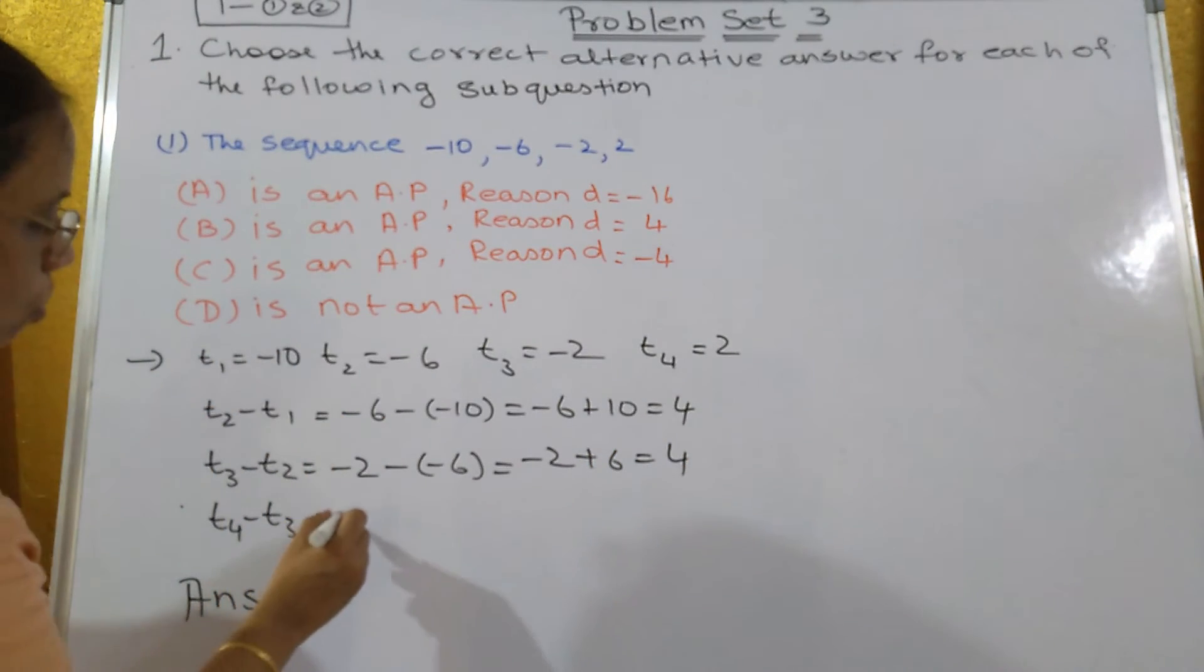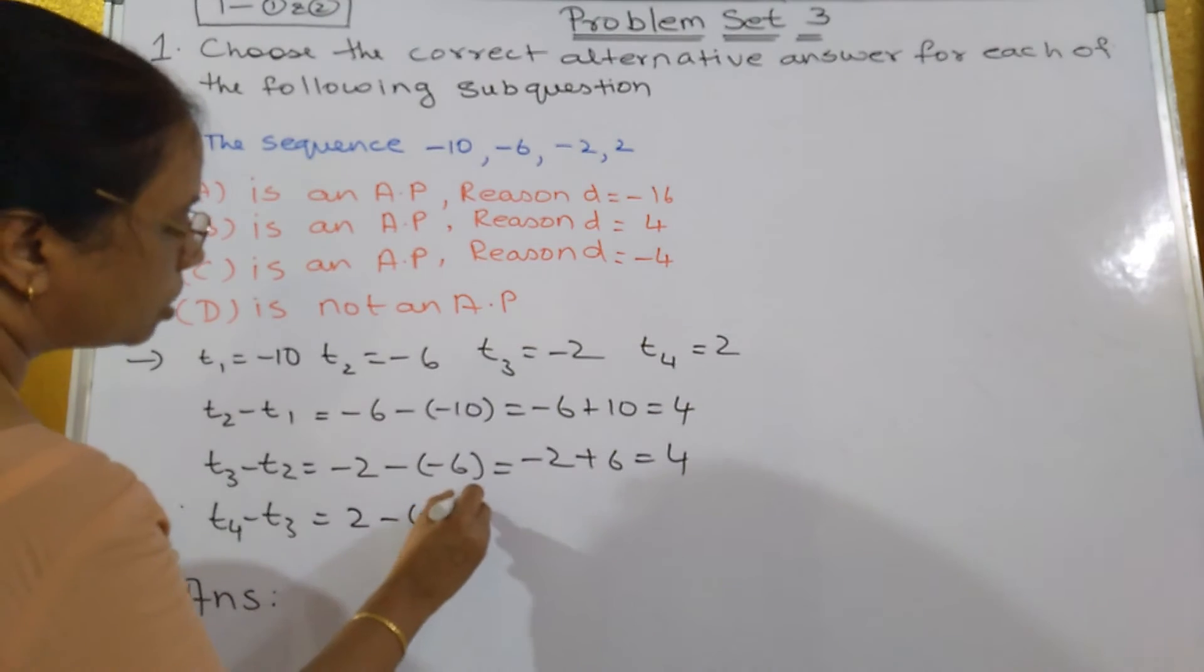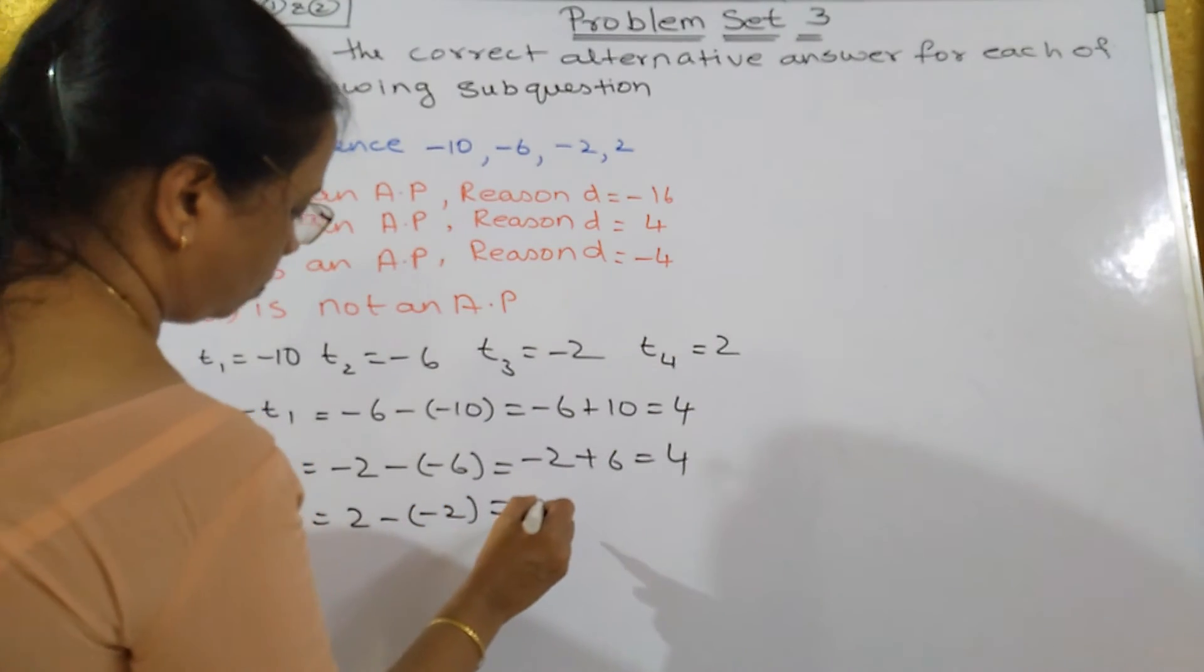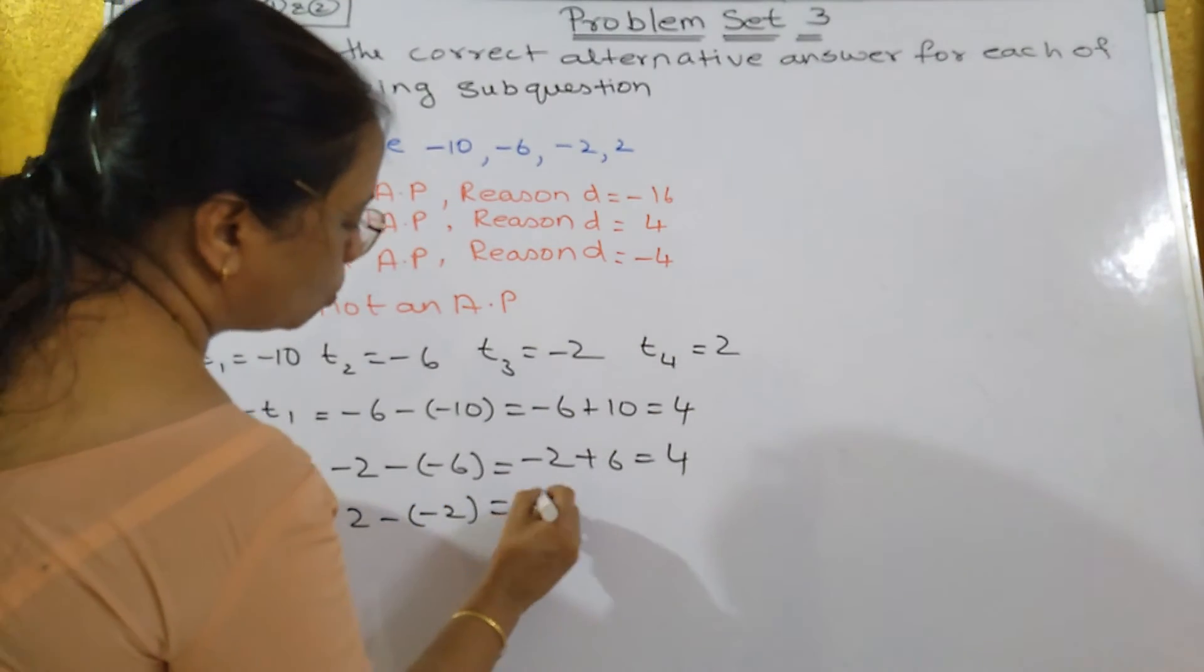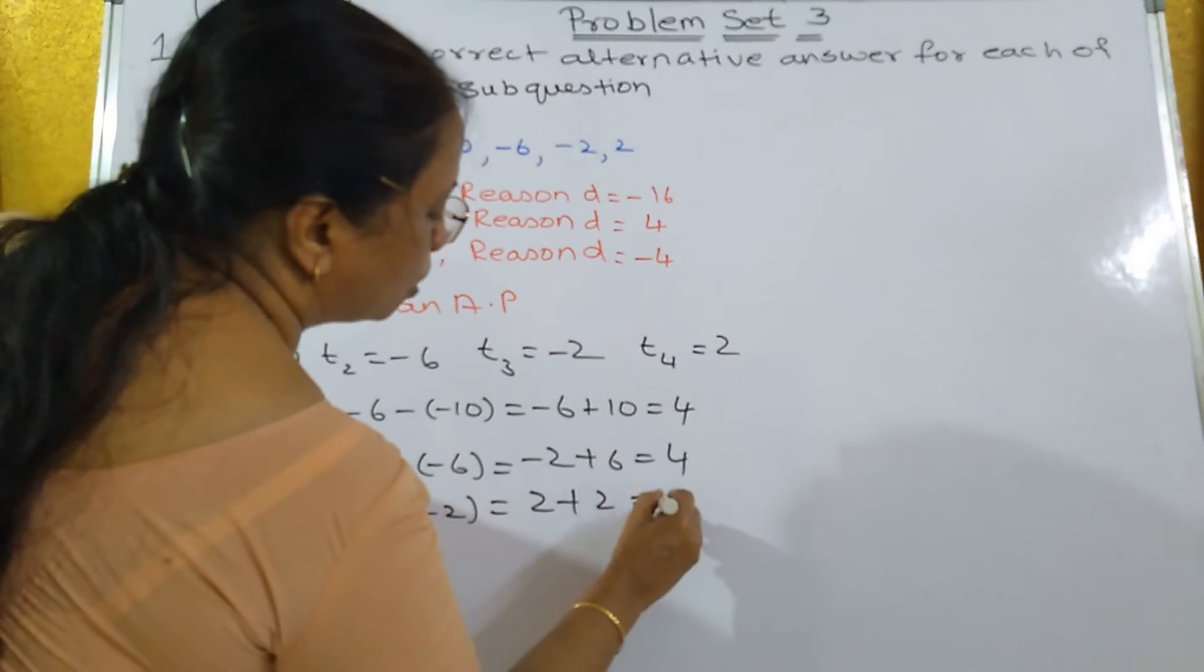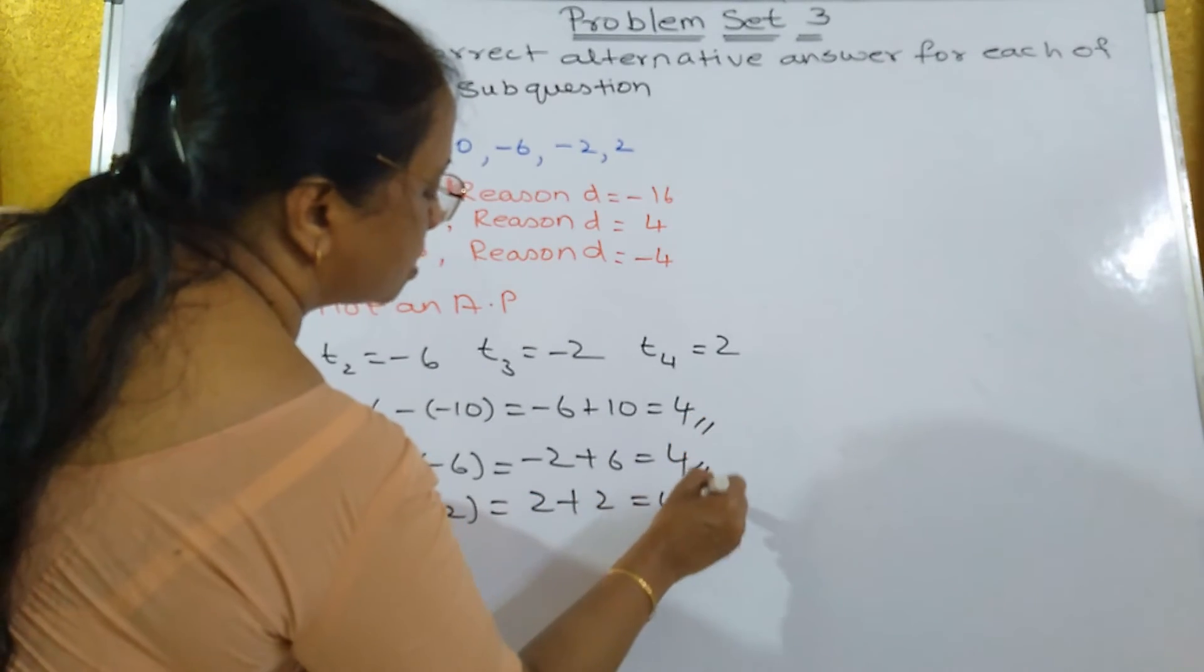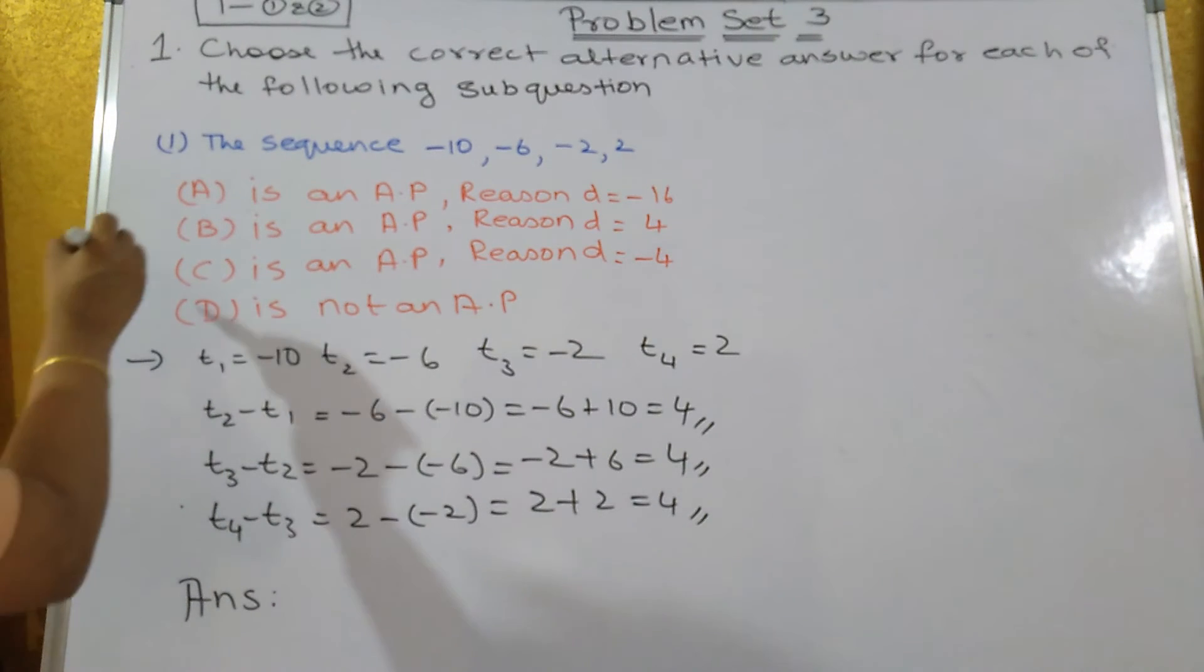Minus 2 minus minus 6, that's equal to minus 2 plus 6, that's equal to 4. Next one, 2 minus minus 2, that's equal to 2 plus 2, that's equal to 4. Since the common difference is same, so yes it is in AP and the common difference is 4.